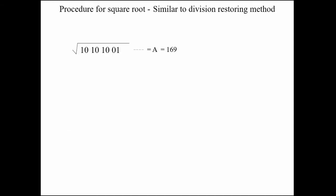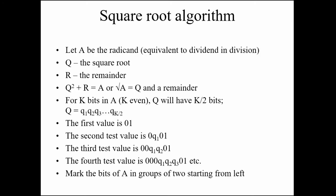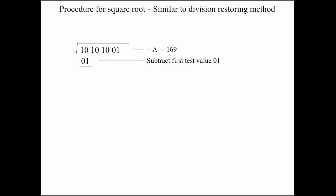I am taking 169 as my example, with binary representation 10101001. The first test case value is 01. After subtracting, we get 01, which is positive. So we store the first bit of Q as Q1 = 1. Whenever the subtraction result is positive or zero, we store 1; if negative, we store 0.